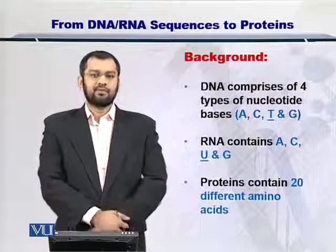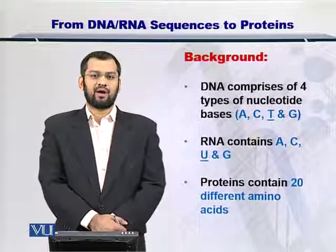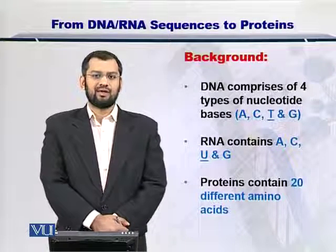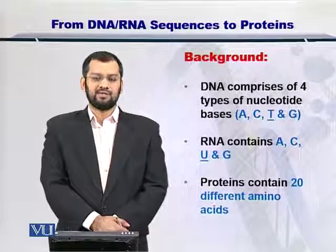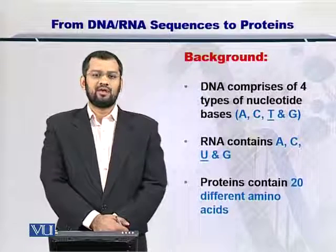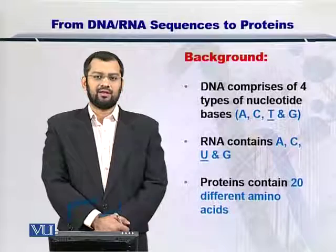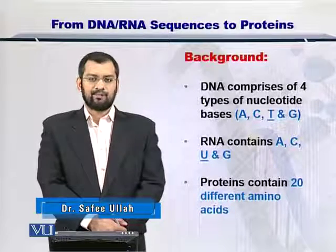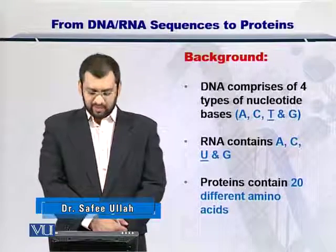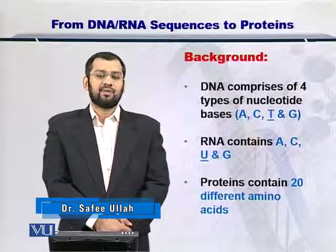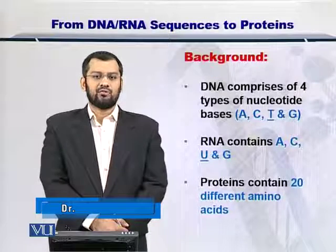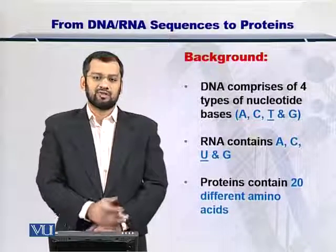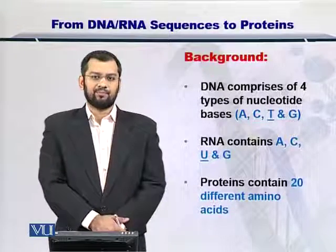As you know, the DNAs are comprised of four different types of nucleotides: A, T, C, and G. Once this DNA encodes the RNA, the T is converted into a U. However, A, C, and G stay the same. So therefore, the types of nucleotides that encode an RNA are still four in number.